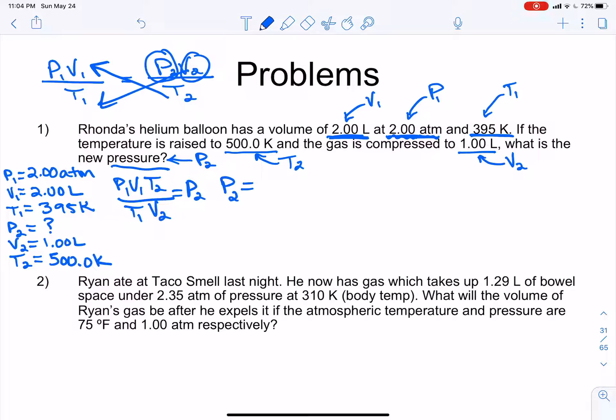So we'll go ahead and say P2 is equal to. And we'll go ahead and plug and chug. So our first variable is P1 and that is right there. So we have 2 atm. And we're multiplying that by V1, which is 2 liters. And then we're multiplying that by T2. And your brain's going to want to do P1, V1, T1. Don't let it. Make sure you get T2 in there. T2 is what? It's 500 Kelvin. And we're going to divide that by T1 and V2. And T1 is 395 Kelvin. And V2 is 1 liter.